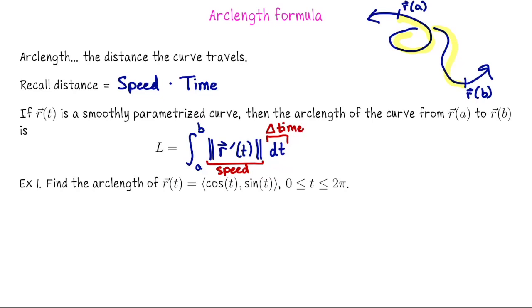Let's start with an example of an arc length that we know very well. So find the arc length of r of t equals cosine of t sine of t going from 0 to 2 pi. So this is the arc length of the unit circle. We expect the answer to be 2 pi.